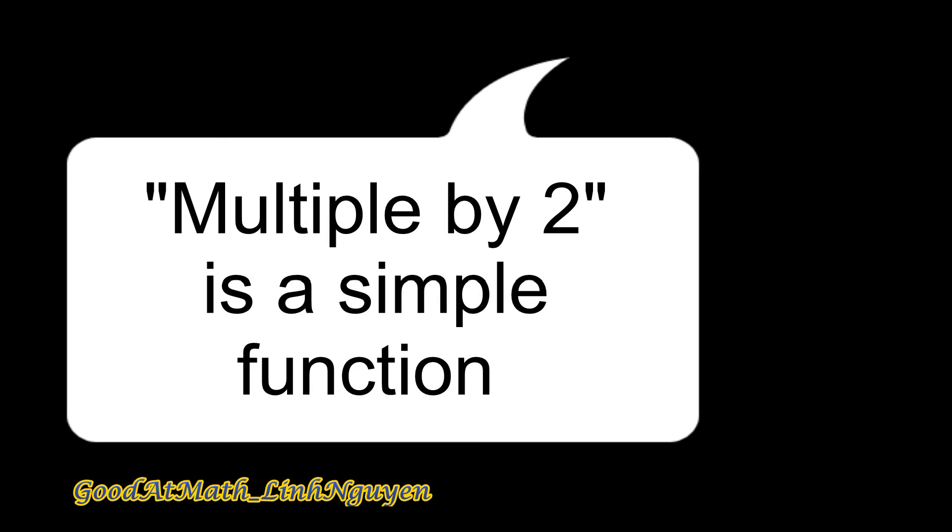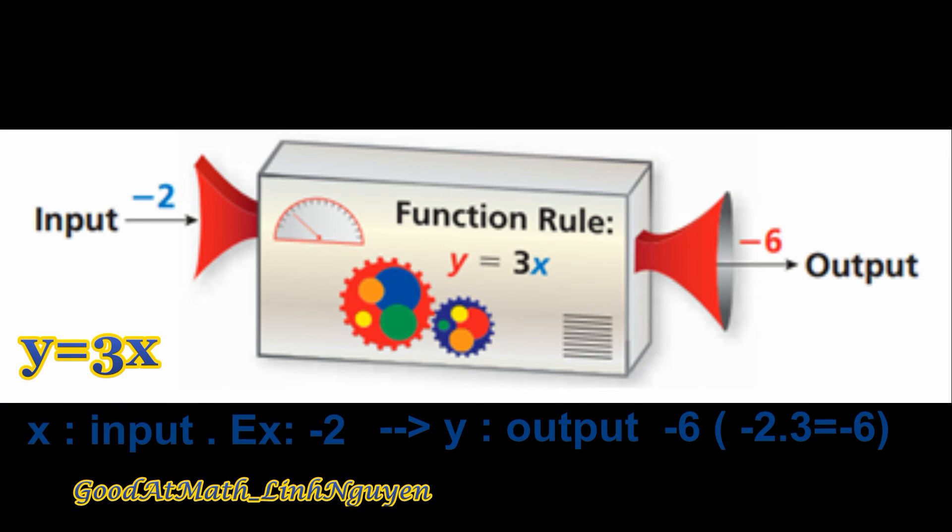Multiply by 2 is a simple function. It's like a machine that has an input and an output. The output is related somehow to the input.